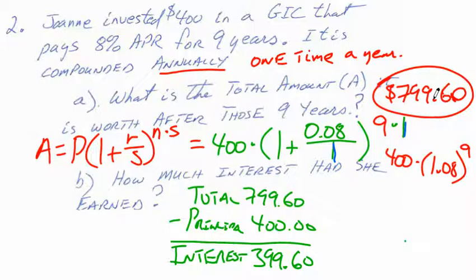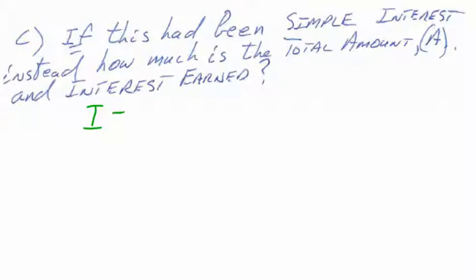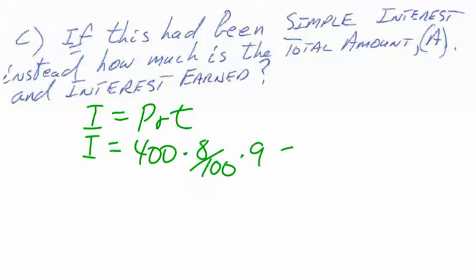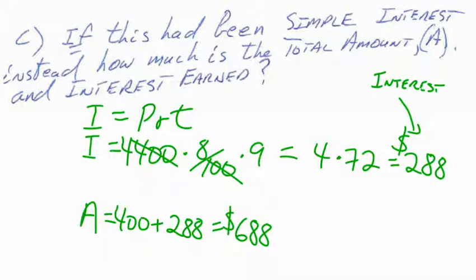Remember the rule of seventy-two? If the interest rate times the number of years equals seventy-two, you'll pretty much double your money. Notice four hundred doubled is eight hundred, which is close to what she got. Also, if she'd only had simple interest instead, she would have earned only two hundred and eighty-eight instead of three hundred ninety-nine sixty. Compound interest always pays more.